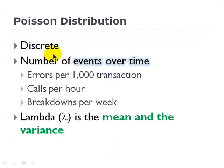So to summarize the characteristics, we say the Poisson is discrete. It is typically used to characterize the number of random events over time. So that would be errors per transactions.